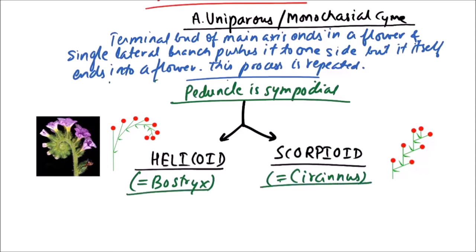Now what is the difference? In helicoid type, all flowers are on same side forming a sort of helix. That's why it is helicoid.